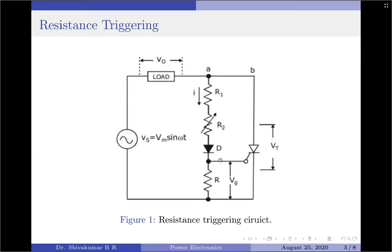In the positive half cycle of the input supply, the SCR goes to forward blocking mode. However, it will not conduct until its gate voltage exceeds some value given by VGT, called the gate threshold voltage. In the same period, the positive input voltage forward biases the diode D and the SCR's gate-cathode junction, causing flow of gate current IG across the gate terminal. This current increases as the supply voltage increases towards its peak value. When the gate voltage VG across resistor R reaches the gate threshold voltage VGT, the SCR turns on and load voltage VL approximately equals the supply voltage VS.